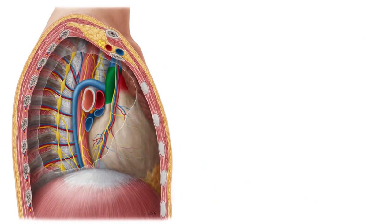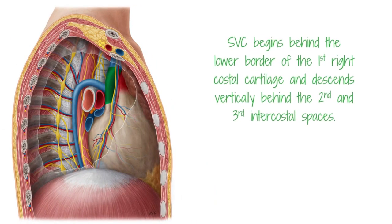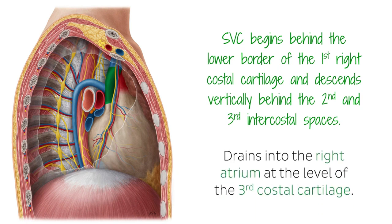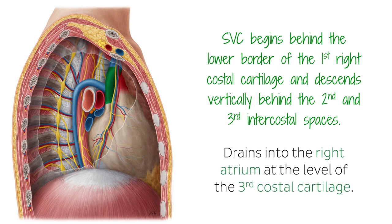Positionally, the SVC begins behind the lower border of the first right costal cartilage and descends vertically behind the second and third intercostal spaces to drain into the right atrium at the level of the third costal cartilage. Its lower half is covered by the fibrous pericardium, which is pierced by the SVC at the level of the second costal cartilage.